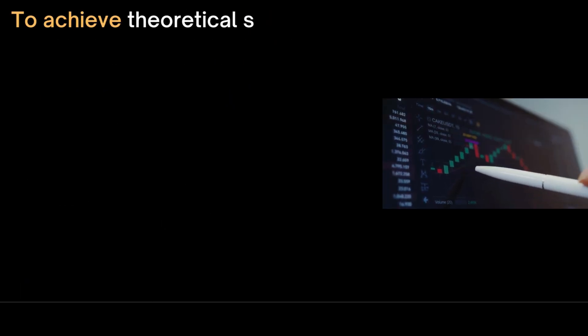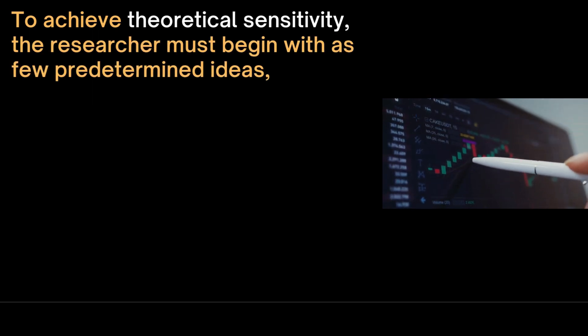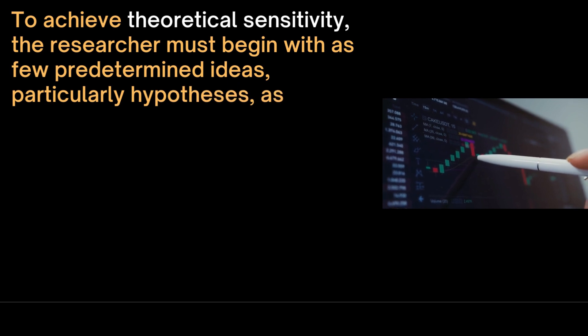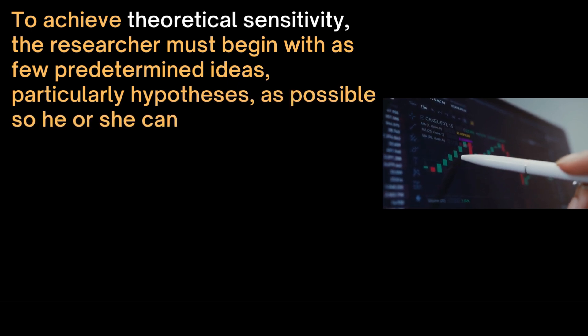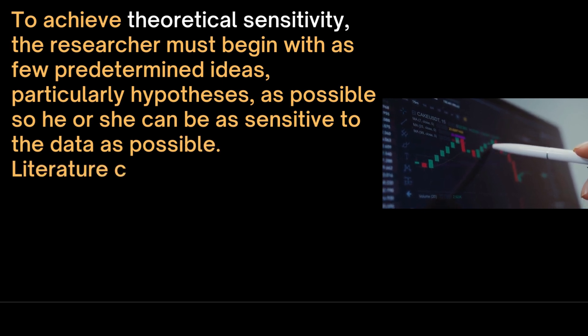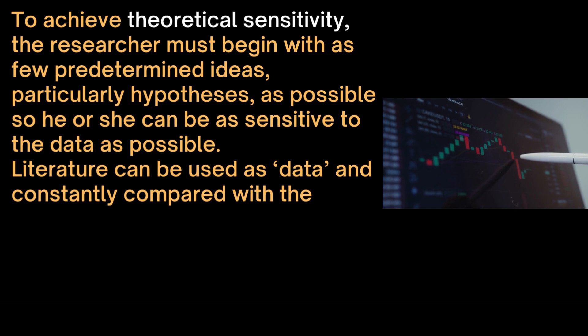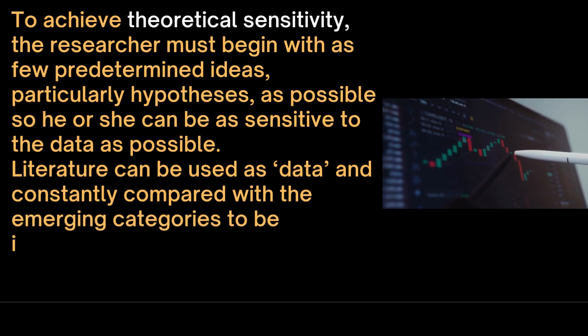To achieve theoretical sensitivity, the researcher must begin with as few predetermined ideas, particularly hypothesis as possible, so he or she can be as sensitive to the data as possible. Literature can be used as data and constantly compared with the emerging categories to be integrated in the theory.